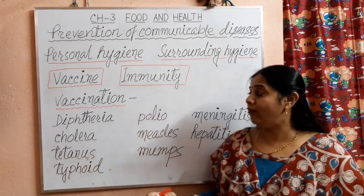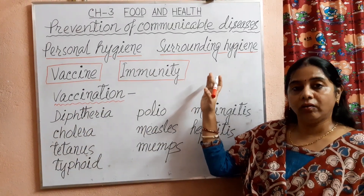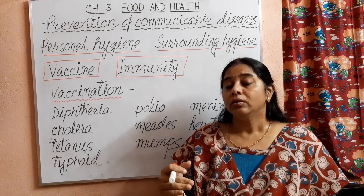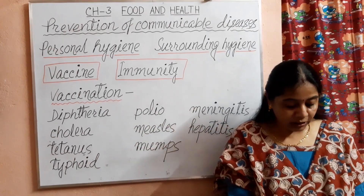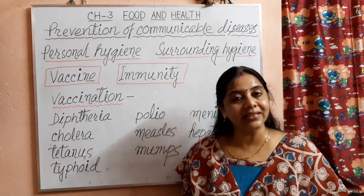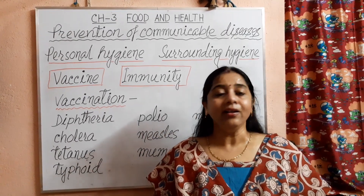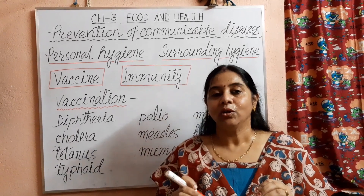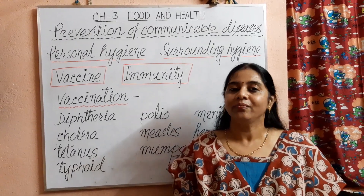So children, this is all about prevention of communicable diseases — how to maintain hygiene, and about vaccine, immunity, and vaccination. You should know about vaccine and vaccination. All of you learn pages 35 and 36 properly. I will provide you question answers in my next class. Till then, all of you stay safe and healthy. I pray to God for the vaccine which can eradicate this spread virus — coronavirus — from this world. Thank you.